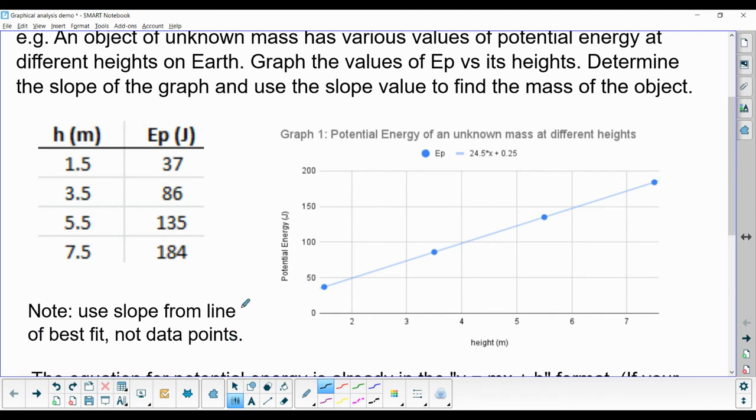As a reminder, you should use the slope from the line of best fit, not data points, because the line of best fit is averaging out all of our data points, and it's better to use the average values of all four data points instead of just one data point.